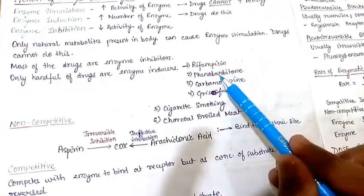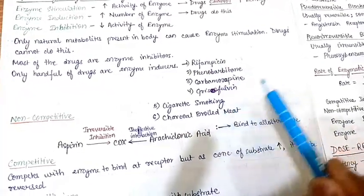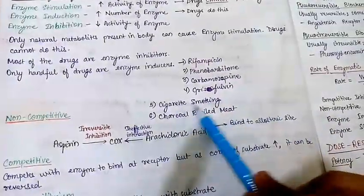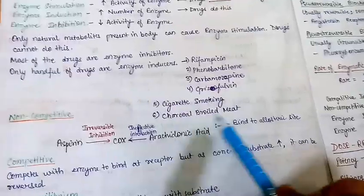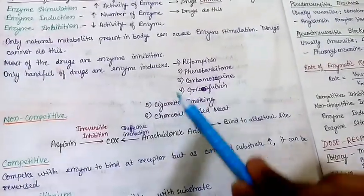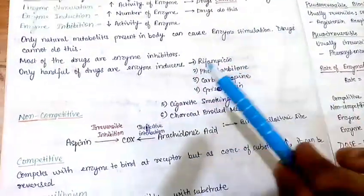Those drugs responsible for enzyme induction are rifampicin, phenobarbitone, carbamazepine, and griseofulvin — also cigarette smoking and charcoal-broiled meat. So these are the drugs which are enzyme inducers.